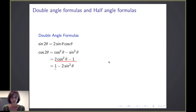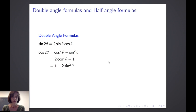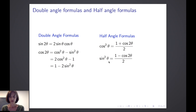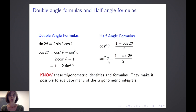We'll take these two formulas for the cosine of 2 theta. We'll solve the first one for cosine squared theta and the second one for sine squared theta, and we will get the half angle formulas. Cosine squared theta equals 1 plus the cosine of 2 theta, divided by 2. And sine squared theta equals 1 minus the cosine of 2 theta, divided by 2. You are expected to know these trigonometric identities and formulas, as they make it possible to evaluate many trigonometric integrals.